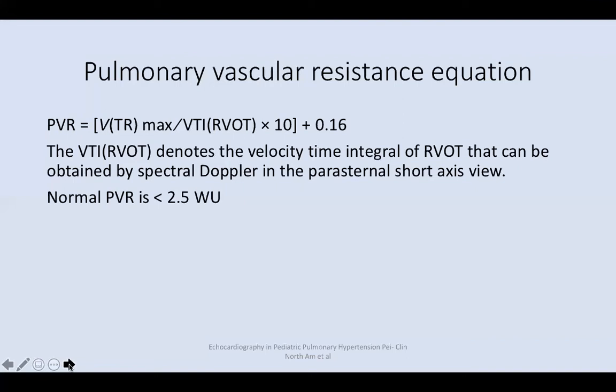The pulmonary vascular resistance equation measured by echo is: the velocity of the TR divided by the VTI of the RVOT, times 10 plus 0.16. The VTI RVOT denotes the velocity time integral of the RVOT, obtained by spectral Doppler in the parasternal short-axis view. Normal pulmonary vascular resistance is less than 2.5 Wood units.